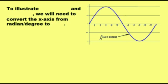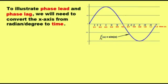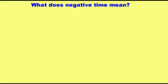Next I will discuss phase lead and phase lag. In order to illustrate phase lead and phase lag, we need to convert the x-axis from radian or degree scale to time scale. Before going further, I will give you the concept of time on the x-axis. What does negative time mean on the x-axis?